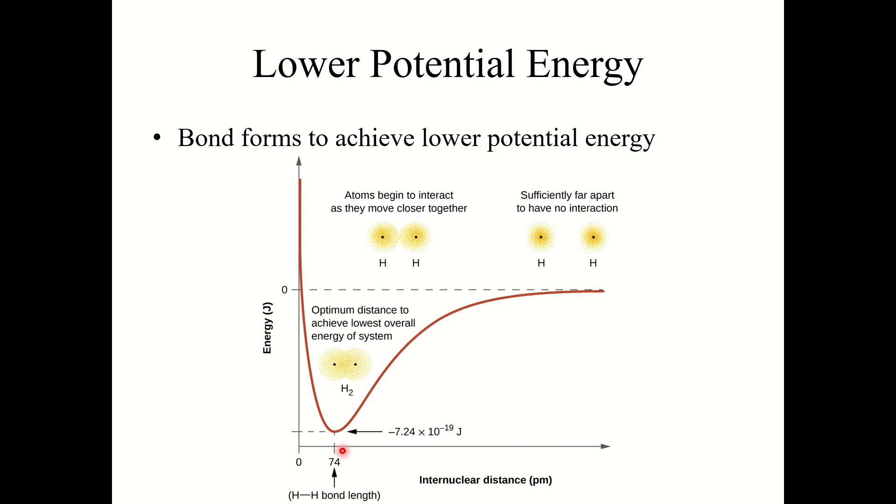Now if we start to push the bonds closer and closer together, you notice the potential energy spikes, and it almost goes infinite. This is because if we push the nuclei too close to one another, the positive forces from both these nuclei is going to cause the nuclei to fly off into space. They're going to bounce off one another, they'll get too close to interact.